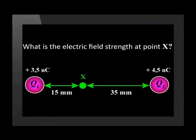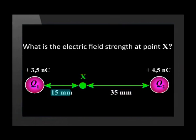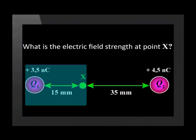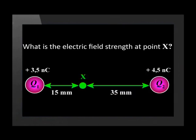We can also use this equation to calculate the strength of the electric field at a point due to a number of charges. Two charges, Q1 of positive 3.5 nanocoulombs and Q2 of positive 4.5 nanocoulombs, are separated by a distance of 50 millimeters. What is the electric field strength at point X, which is 15 millimeters from Q1 and 35 millimeters from Q2? We do two separate calculations: the electric field strength at X due to Q1 and then due to Q2, and then add the vectors to calculate the resultant electric field strength at X.